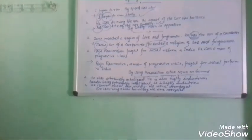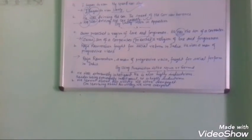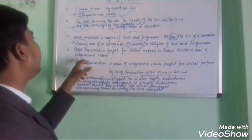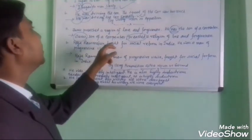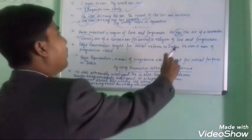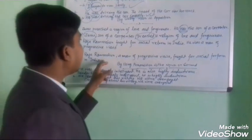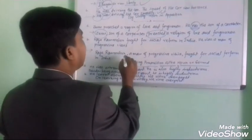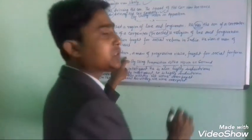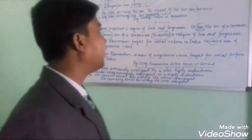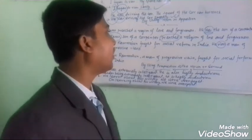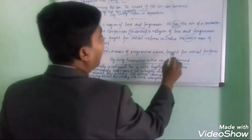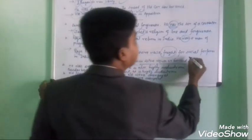In example B: 'Raja Rammohan fought for social reform in India. He was a man of progressive views.' After 'Raja Rammohan' I place a comma, and by using that comma I omit the verb 'was'. The joined sentence is: 'Raja Rammohan, a man of progressive views, fought for social reform.' One subject — Raja Rammohan; one verb — fought. It is a simple sentence.